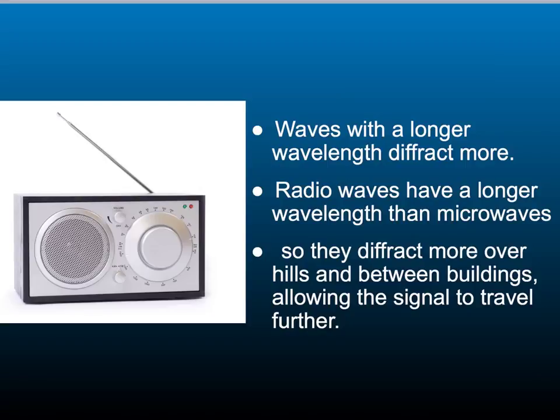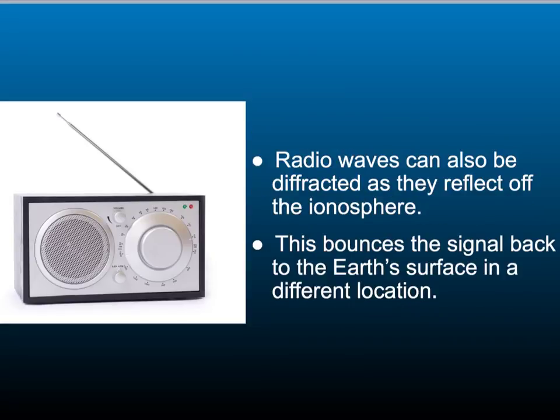Some radio waves have such a long wavelength that they diffract around the curvature of the Earth, allowing them to be transmitted over very long distances — they diffract over the horizon. Some submarines use extremely low frequency radio waves, allowing the submarine to send and receive signals from anywhere on the planet. Radio waves can also be diffracted as they reflect off the ionosphere, bouncing the signal back to the Earth's surface in a different location.